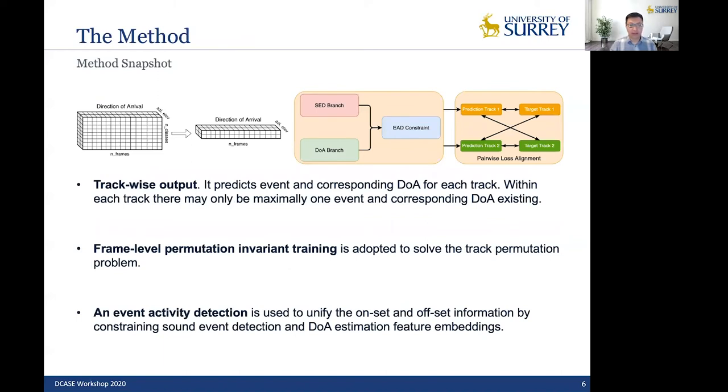And then we have our proposed method to tackle all of the previous mentioned problems. So first, we decrease the regression dimensions to be only two. We decrease the number of classes dimension to two, because two here indicates there are up to two overlapping events. And to achieve that, we use trackwise output. It predicts an event and the corresponding DOA for each track. And then, in order to solve the track permutation problem, we use frame level permutation invariant training.